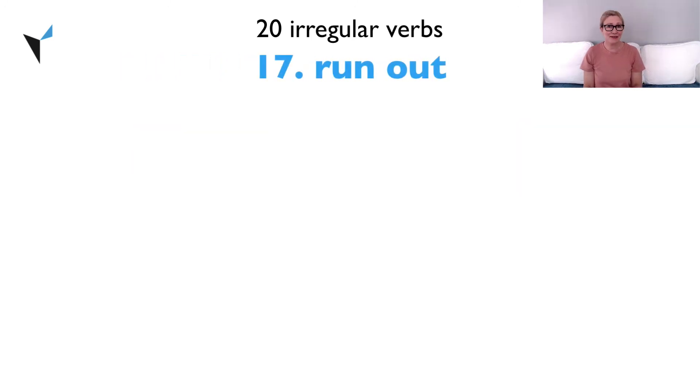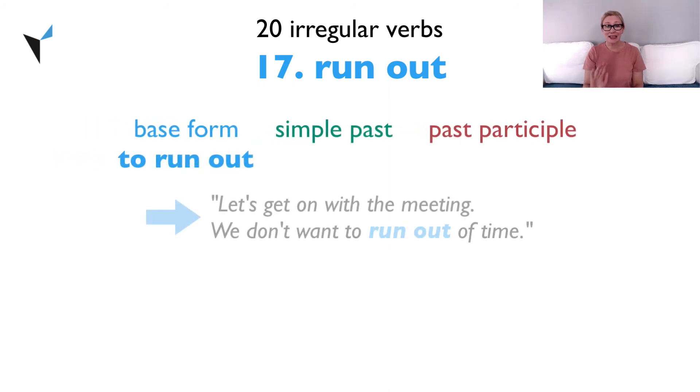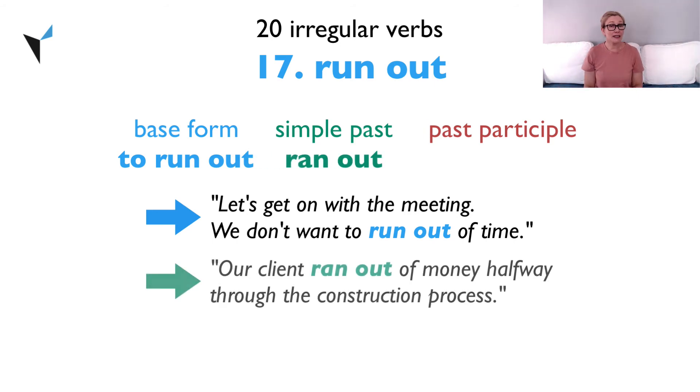Verb 17, run out. The base form is to run out. Let's get on with the meeting. We don't want to run out of time. The simple past is ran out. Our client ran out of money halfway through the construction process. The past participle is run out. Many investors have run out of new investment ideas.